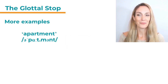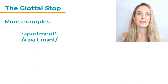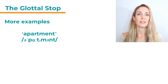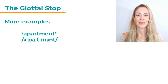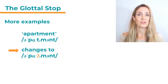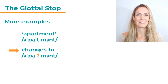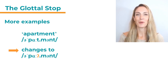Here is another example: the word 'apartment'. It has three syllables. In the second syllable, we have a T at the end, and then the following syllable starts with a nasal — a labial consonant because both lips are closed when I form it. So 'apartment' could also change to 'apartment' — there's a little stop in the middle that makes the vowel a little sharper.